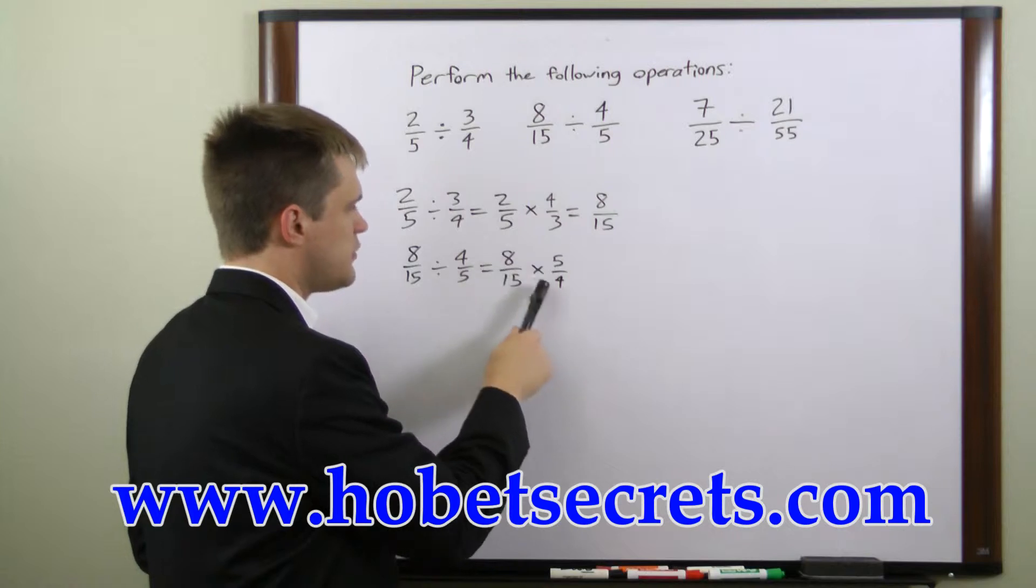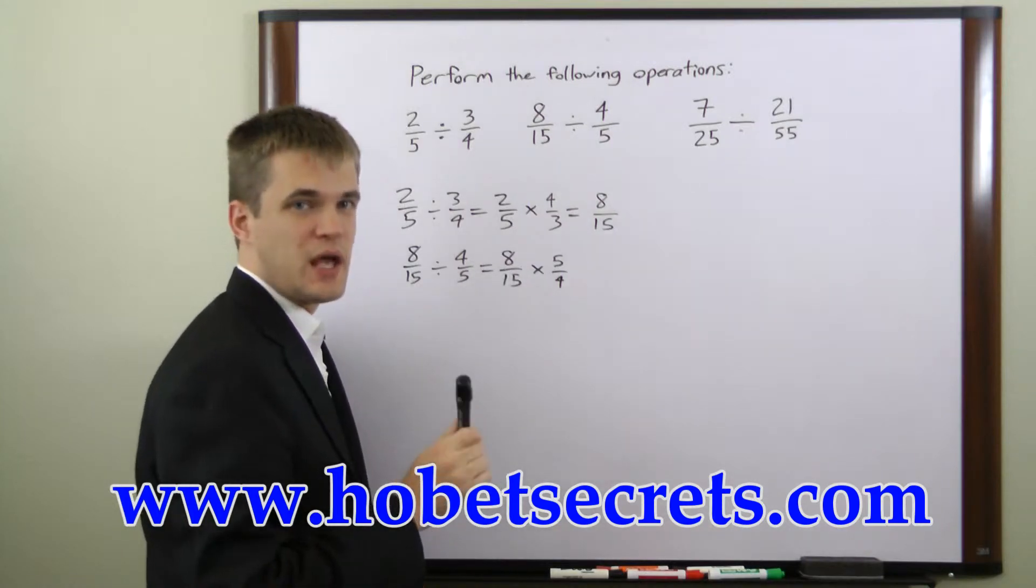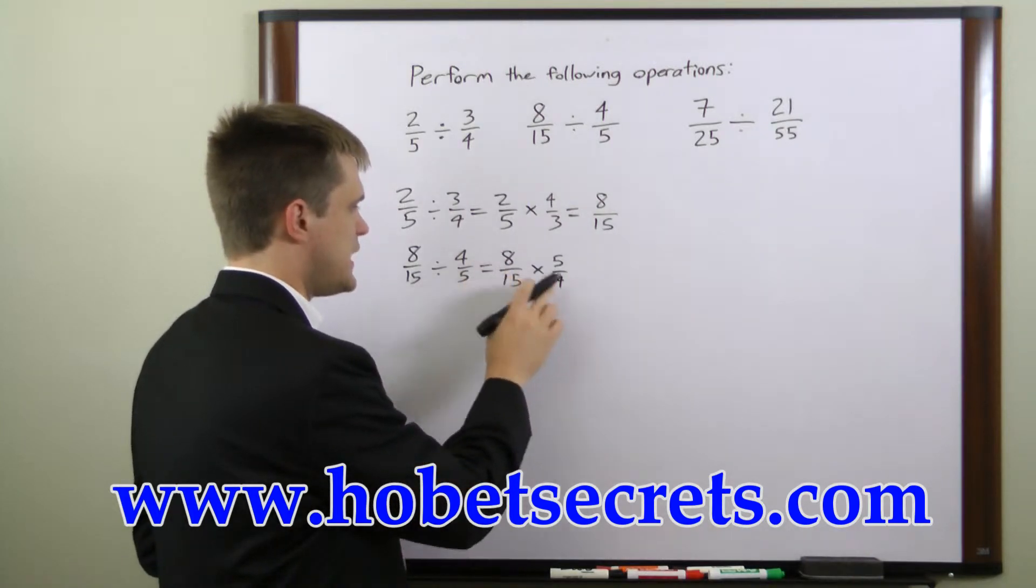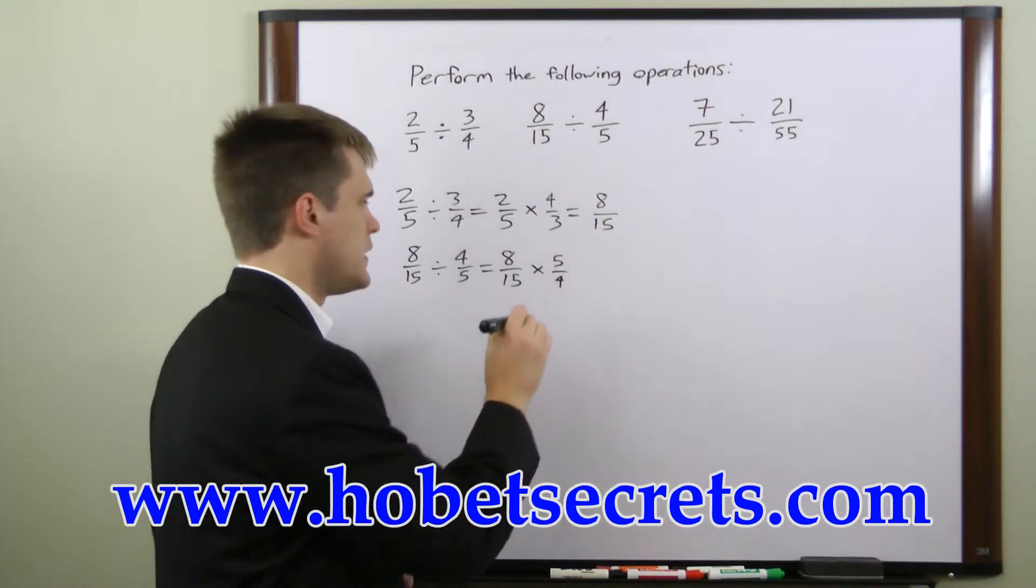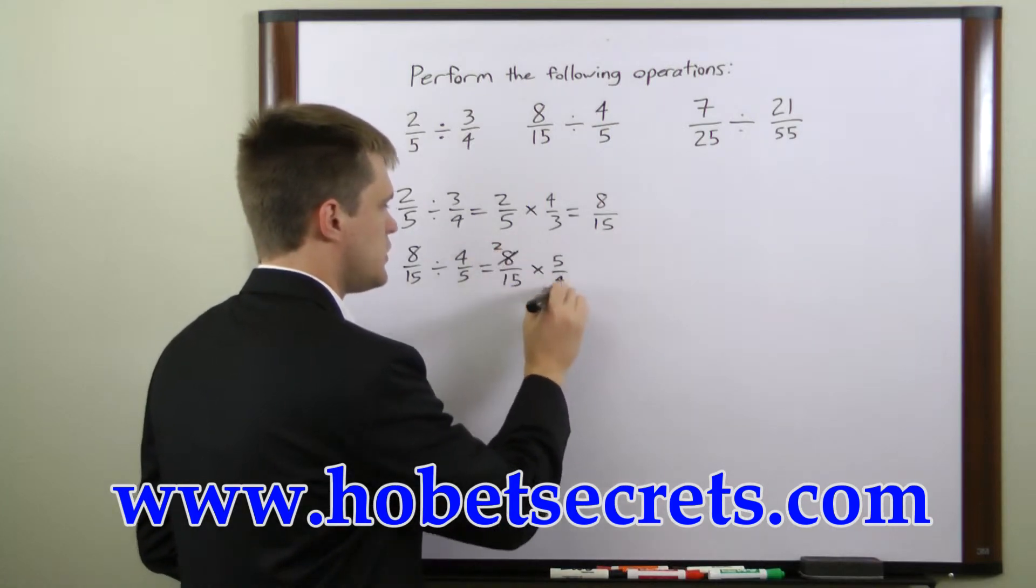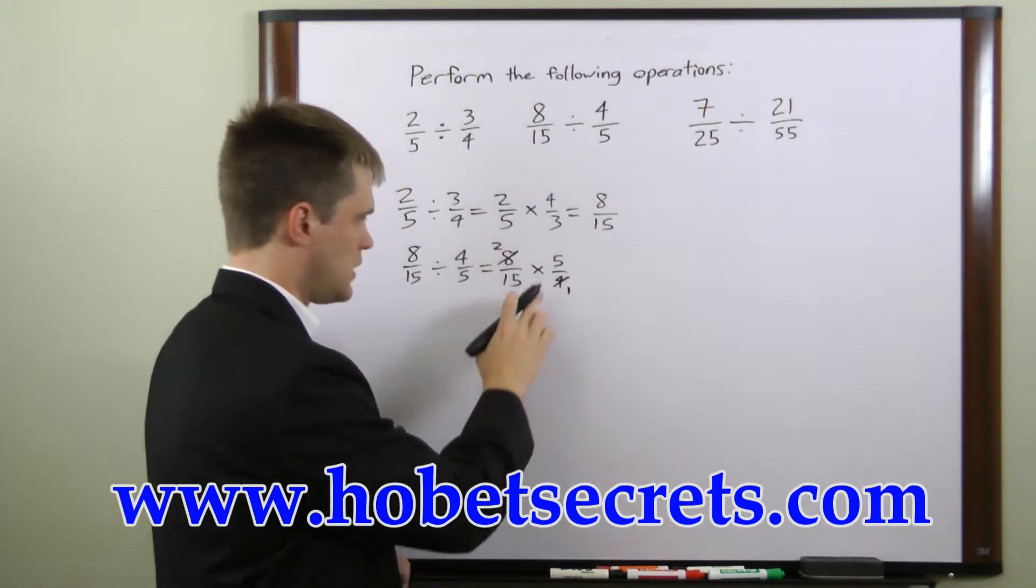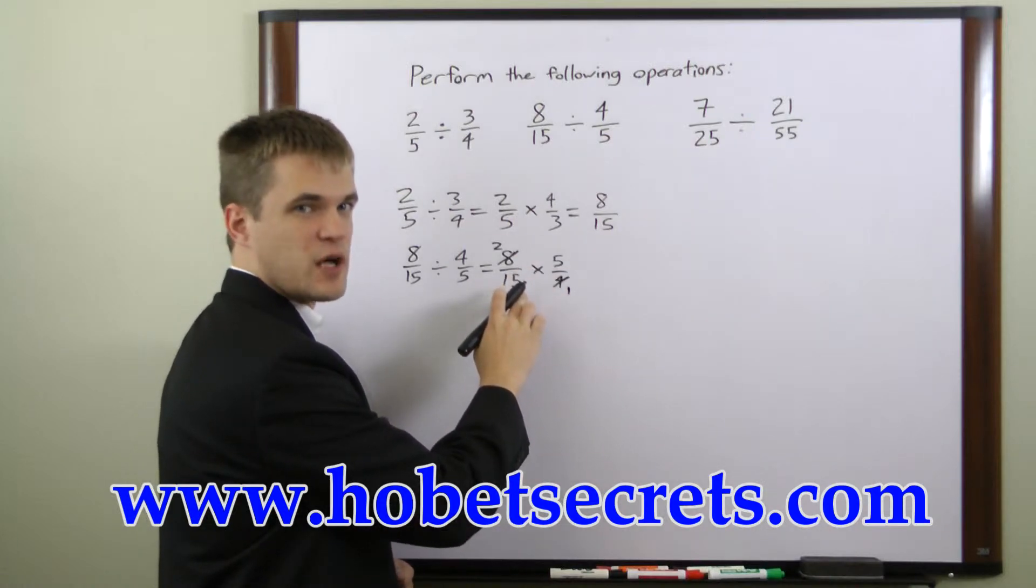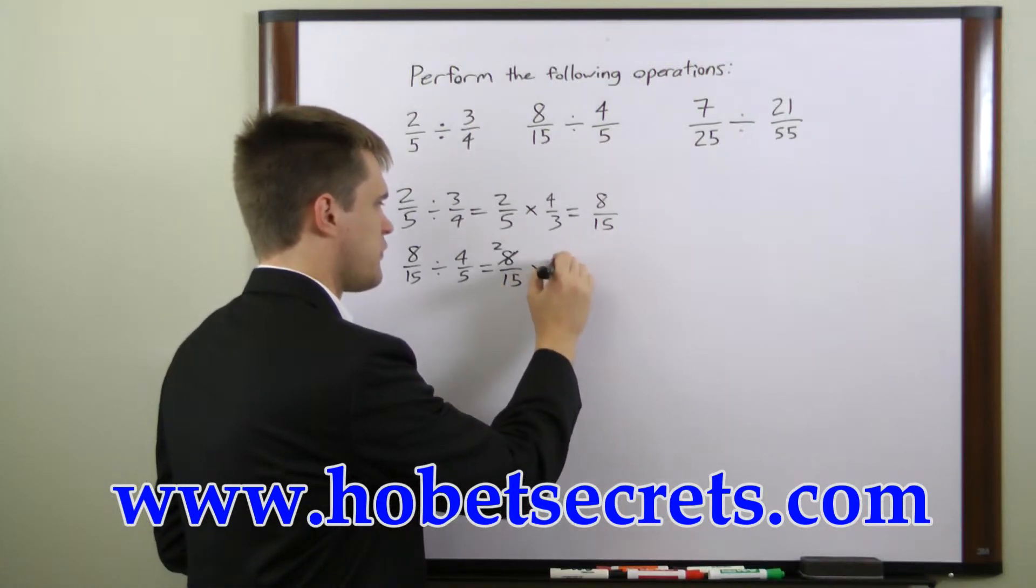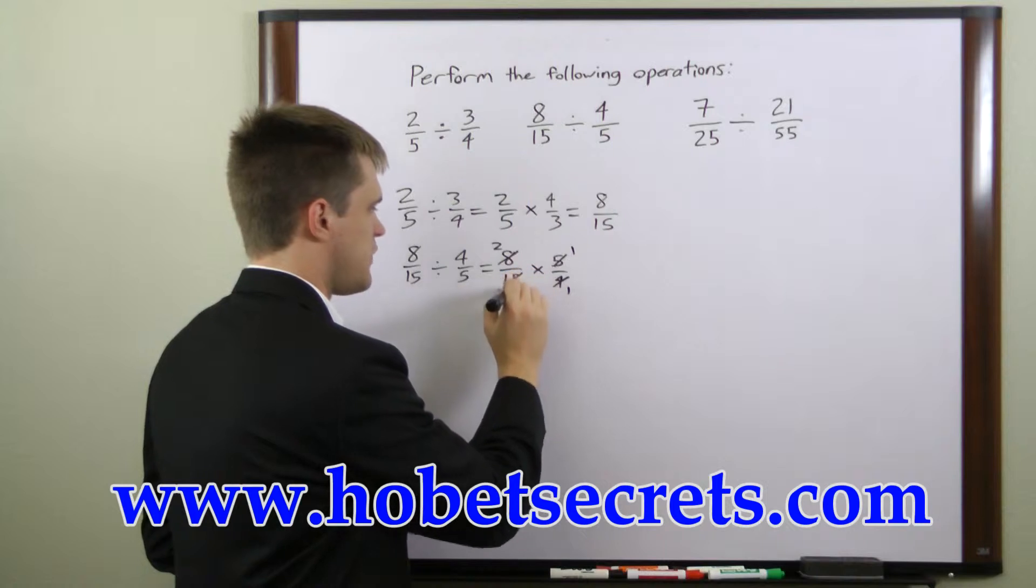Now what we can do before we start multiplying is we can cancel. We can divide eight and four by four. Eight divided by four is two. Four divided by four is one. Five and fifteen can be divided by five. Five over five is one. Fifteen over five is three.